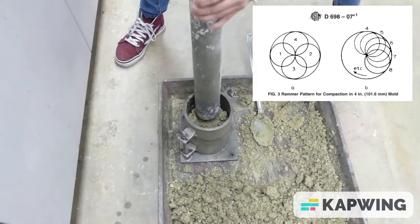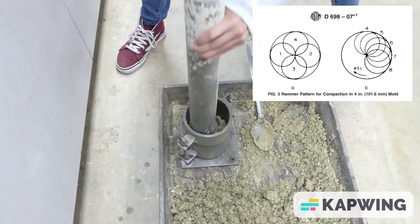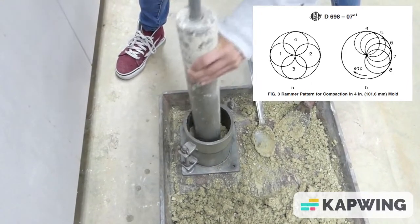Once the first layer is filled, you can compact the soil following this pattern. Each layer will have a total of 25 blows.